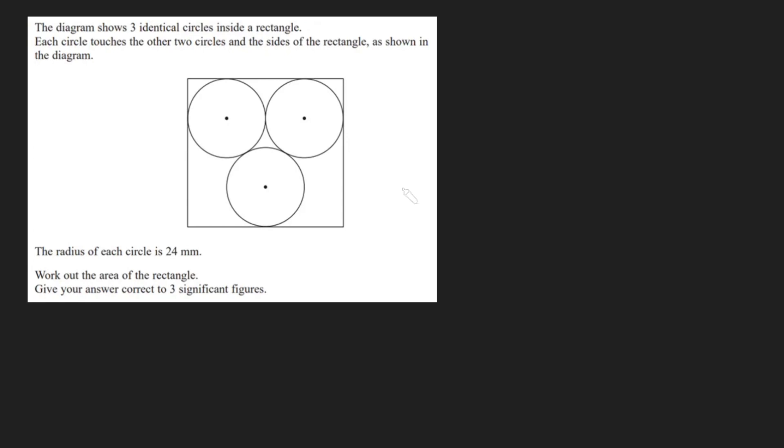In order to work out the area of the rectangle, we need to know this length and the height. The radius is 24. If we just call it R, because we are mathematicians here, let's just call that R. What can we say about the width? The width or the length of this rectangle is clearly going to be four lots of R. Because we've got another R there, another R there, another R there. Perfect. So all we've got to do now is calculate the height of this rectangle.